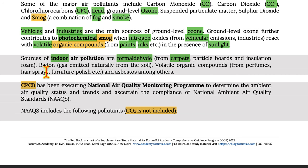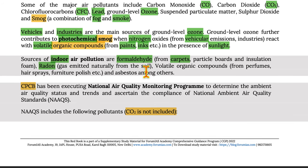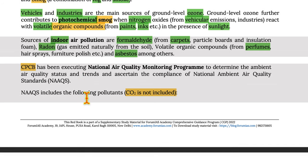Sources of indoor air pollution include formaldehyde from carpets, particle boards and insulation foams; radon, a gas emitted naturally from soil; volatile organic compounds from perfumes, hairsprays, furniture polish, etc.; and asbestos, among others.